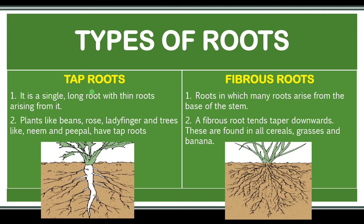Tap roots: it is a single long root with thin roots arising from it. Plants like beans, rose, and ladyfinger, and trees like neem and peepal, have tap roots.